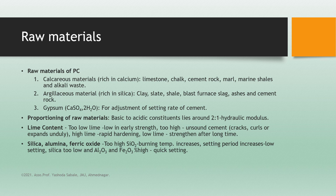Some constituents and their proportions and how they affect cement properties. First, lime content: if there is too low lime, the cement is low in early strength. If lime content is too high, we get unsound cement, meaning it forms cracks, curls, or expands unduly. High lime content gives rapid hardening cement; low lime content means strength develops only after a long time.